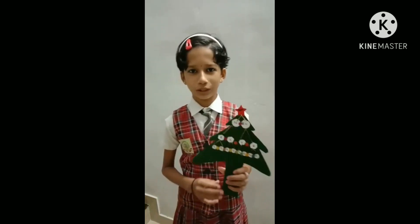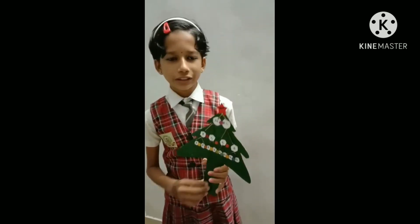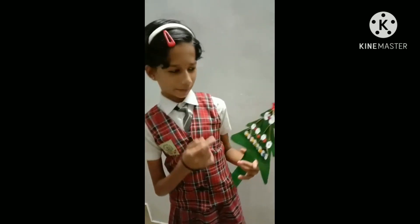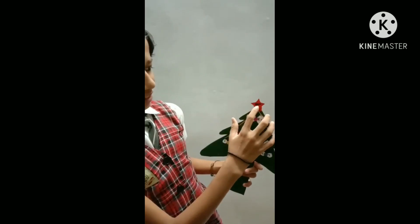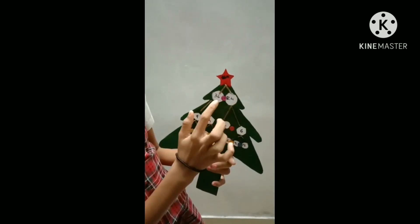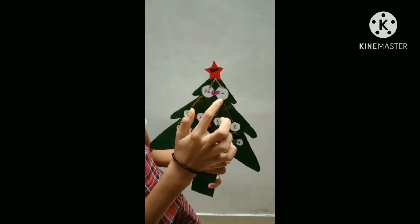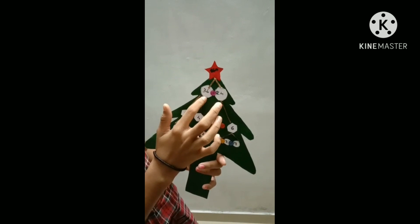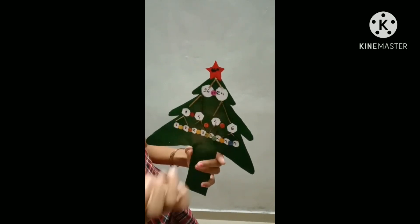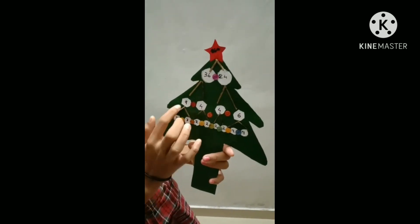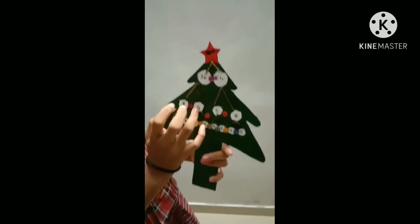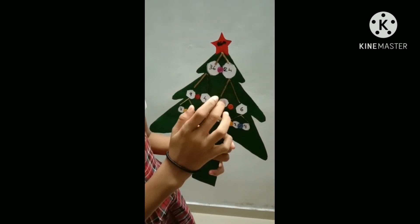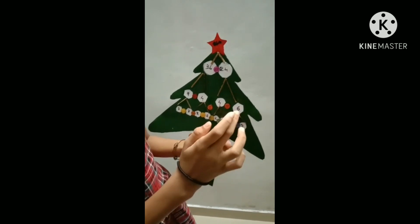Hello my dear friends. I am Sreya Arun of class 6. Today I am presenting a factorization tree. This is 864: 36 × 24 = 864. 9 × 4 = 36. 4 × 6 = 24. 3 × 3 = 9. 2 × 2 = 4. 2 × 2 = 4 again. 2 × 3 = 6.